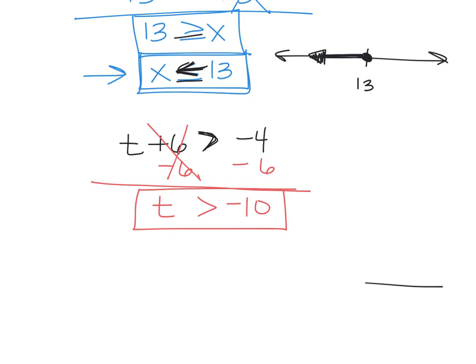And then to graph that, if t has to be greater than negative 10, here's our negative 10. Open or closed dot? Open dot because you don't have the equal sign here. And t is greater than that. Where do you go?